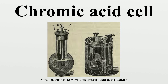The cell was made in two forms: the single fluid type, attributed to Poggendorff, and the two fluid type, attributed to Fuller. In both cases, cell voltage was about 2 volts.